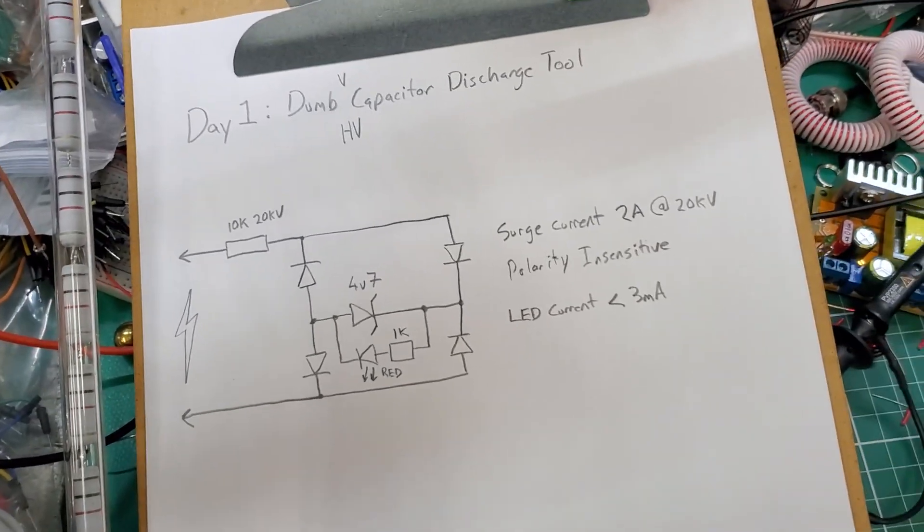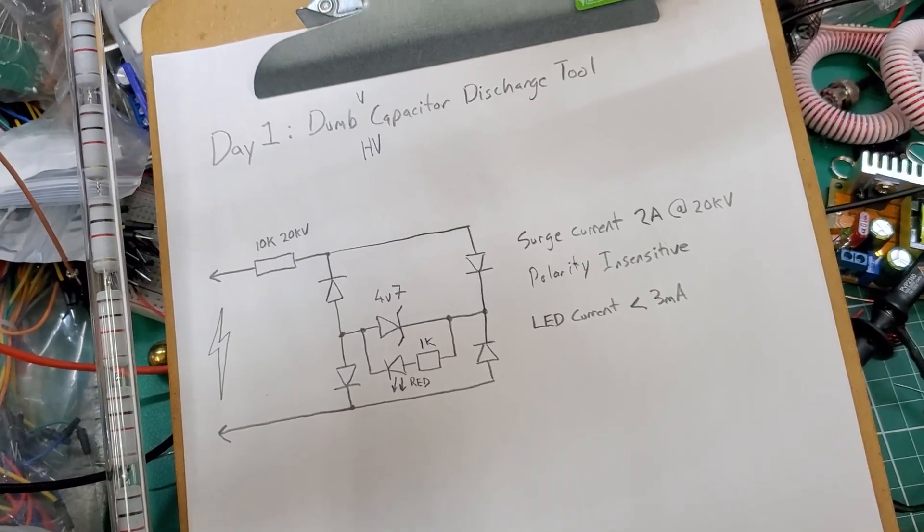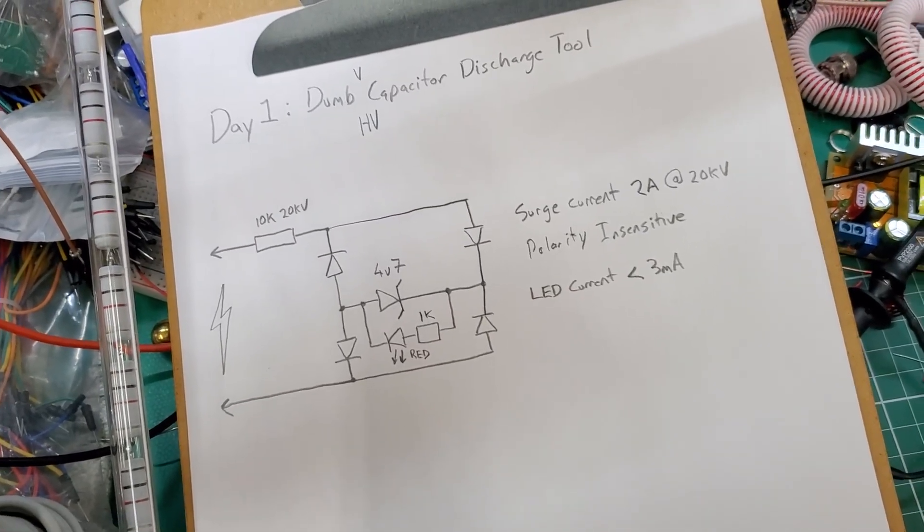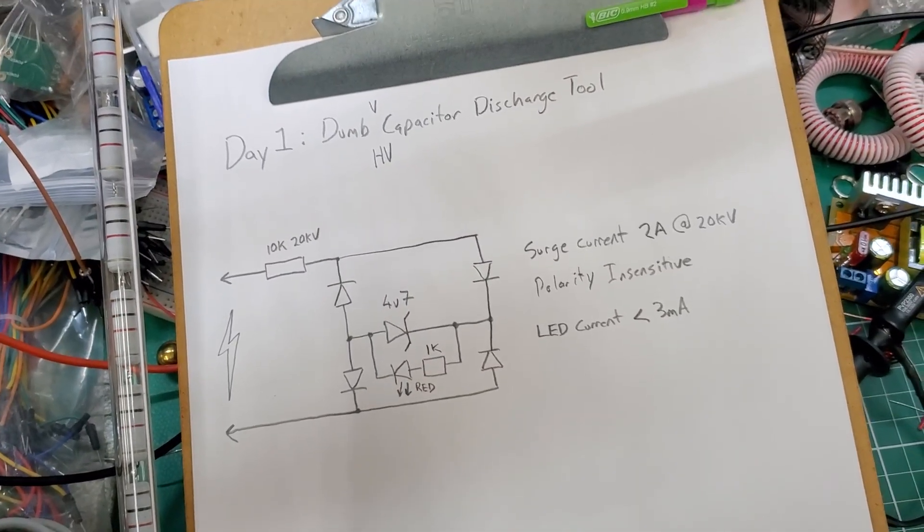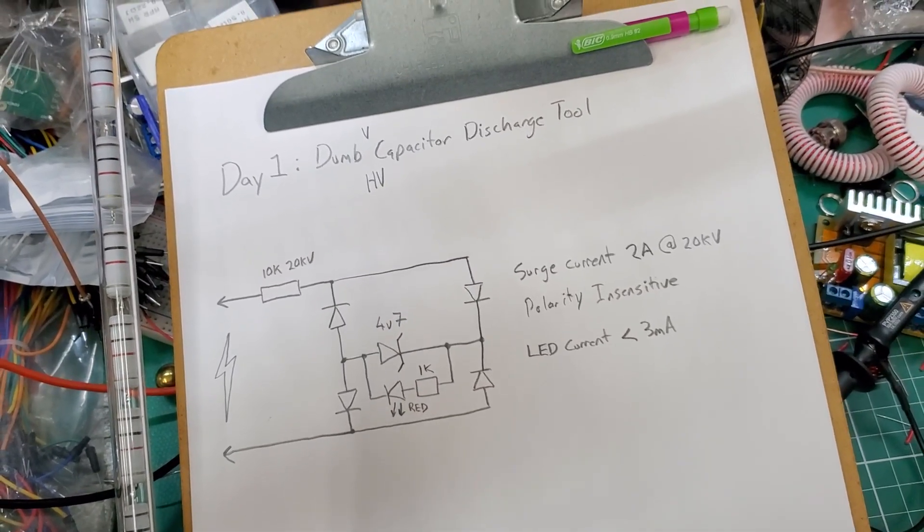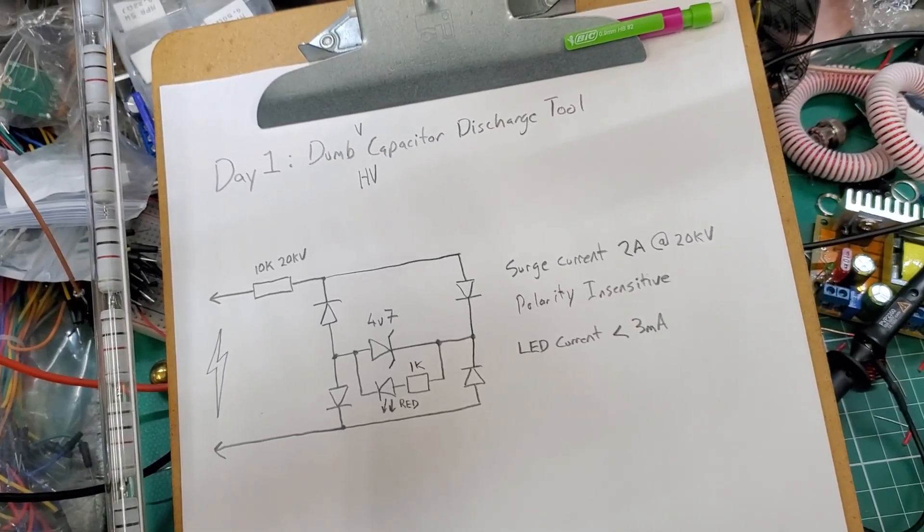So I've been doing some pulse power experiments lately with high voltage capacitors, and perhaps other experiments over the years. I probably should have had one of these rather than just shorting capacitors with a resistor or a screwdriver and melting the screwdriver across the terminals. But I finally got around to building a dumb discharge tool.